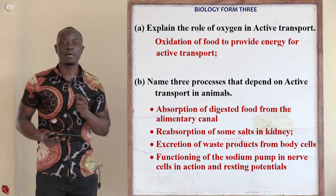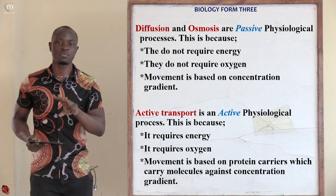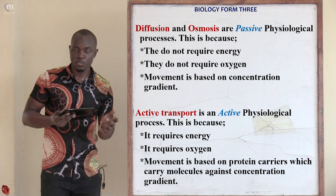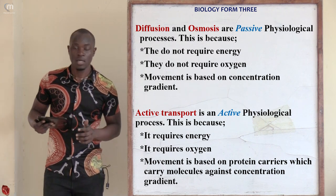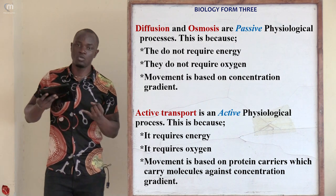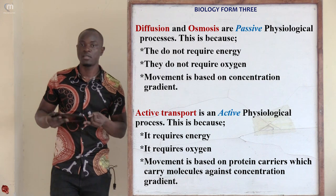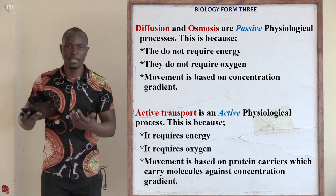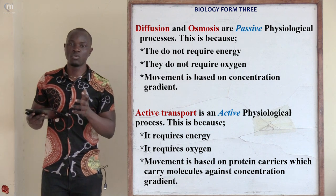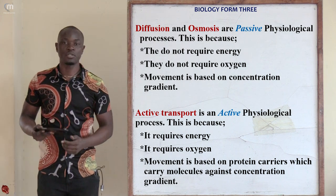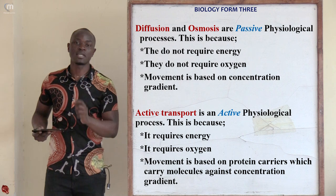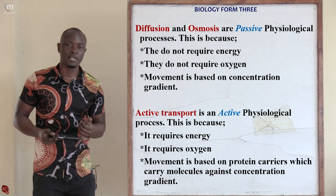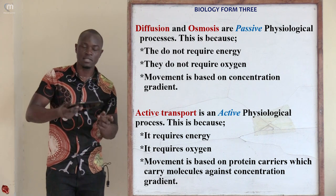In cell physiology we have three types of physiological processes: diffusion, osmosis, and active transport. Diffusion and osmosis are passive because they don't use oxygen. Active transport is active because it must use oxygen and protein carriers. Active transport is defined as the movement of molecules against the concentration gradient — it may force molecules to move from a region of low concentration to a region of high concentration using protein carriers and energy.